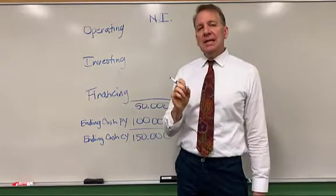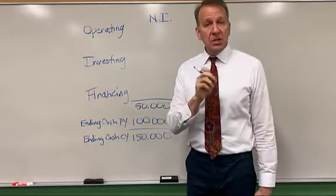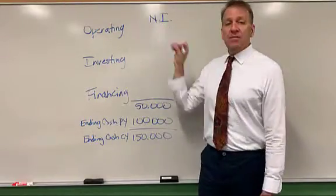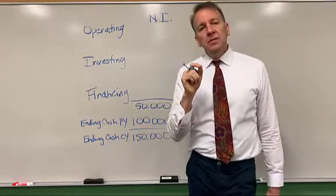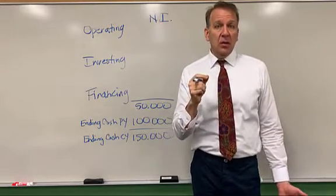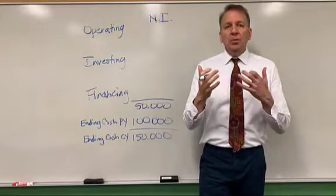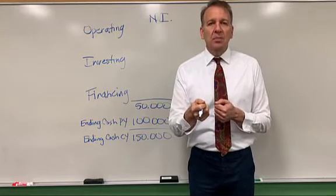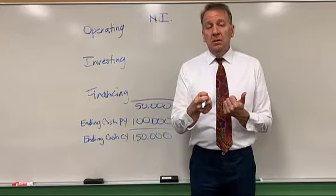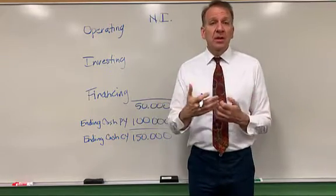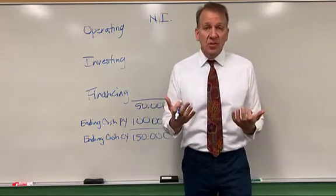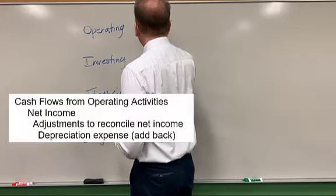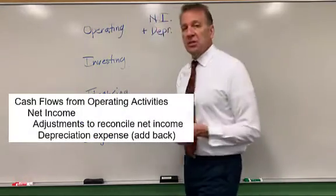One of the big numbers usually in net income is depreciation. Depreciation expense has been subtracted out of net income, but depreciation is not a cash flow number. Remember, when we depreciate a building or some equipment, are we actually paying money out when we calculate that depreciation? No. The cash flow went out when we paid for it. The depreciation has nothing to do with cash flow — it's just an accrual basis expense. So since we subtracted it out, we're going to add back depreciation.